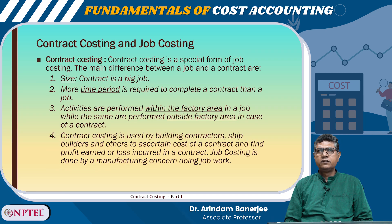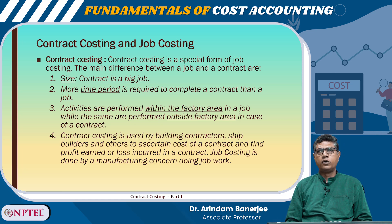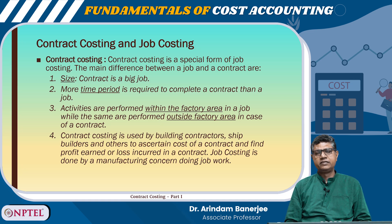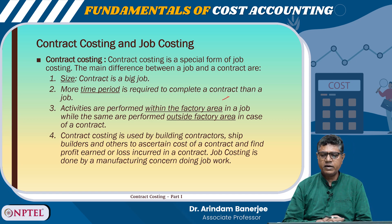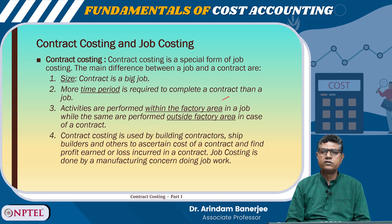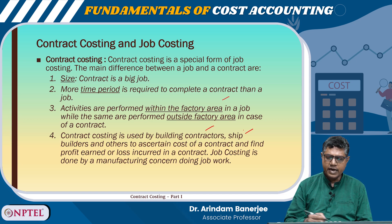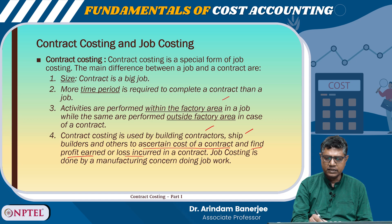Contract costing is basically a special type of job costing, with a few differences. First difference is size — a contract is a big job, like construction of a flyover or a river bridge. More time is required to complete a contract than a job. Activities are performed within the factory area in a job, but in a contract they are performed outside the factory area. Contract costing is used by building contractors, ship builders and others to ascertain the cost of a contract and find profit earned or loss incurred.